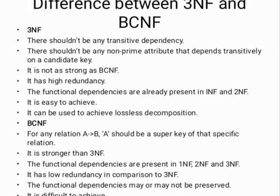Difference between 3NF and BCNF. For 3NF: there should not be any transitive dependency, and there should not be any non-prime attribute that depends transitively on a candidate key. It is not as strong as BCNF, it has high redundancy, the functional dependencies are already present in first and second normal form, it is easy to achieve, and it can be used to achieve lossless decomposition.